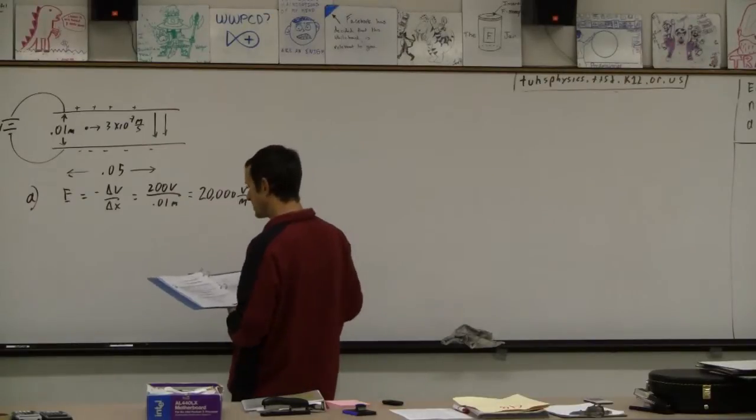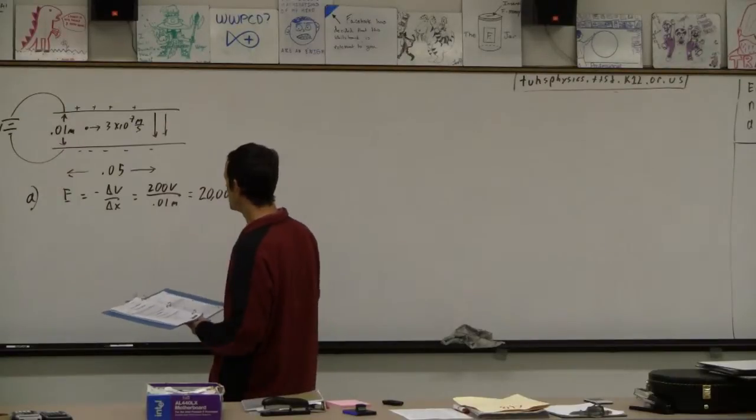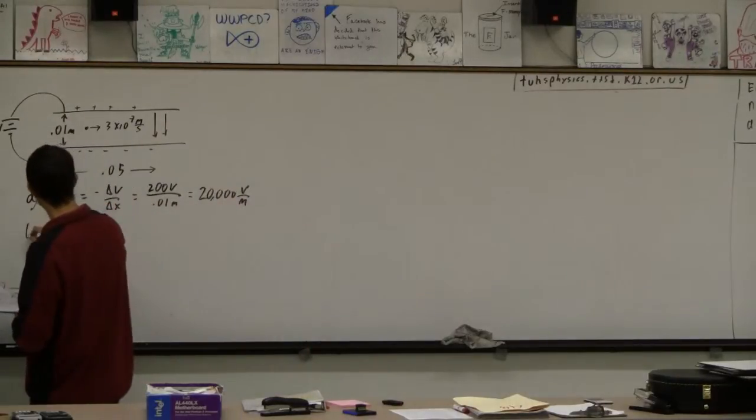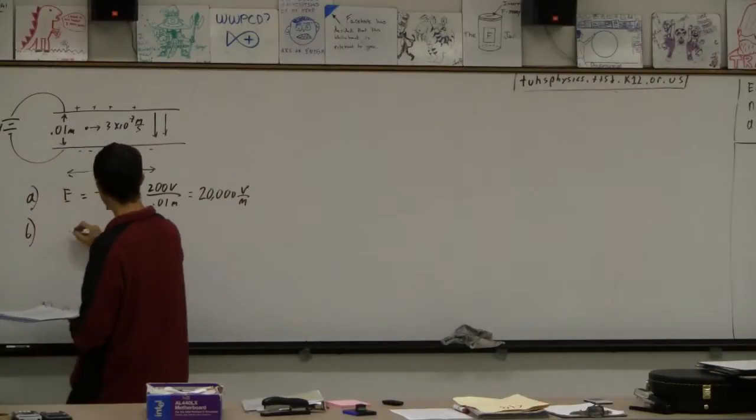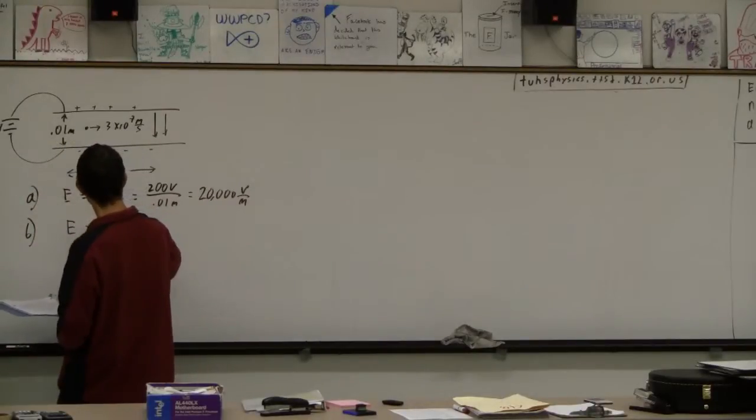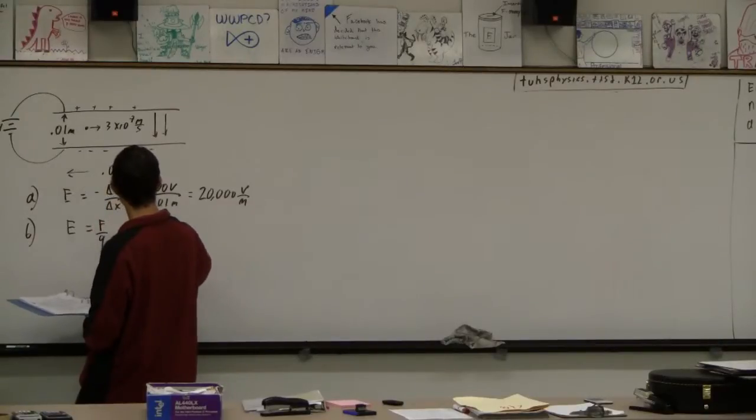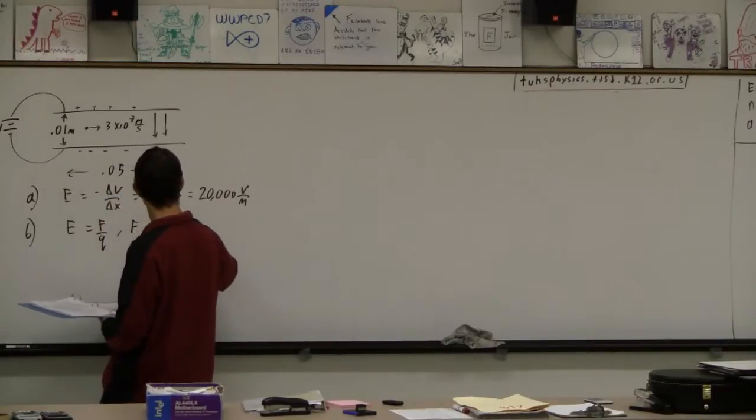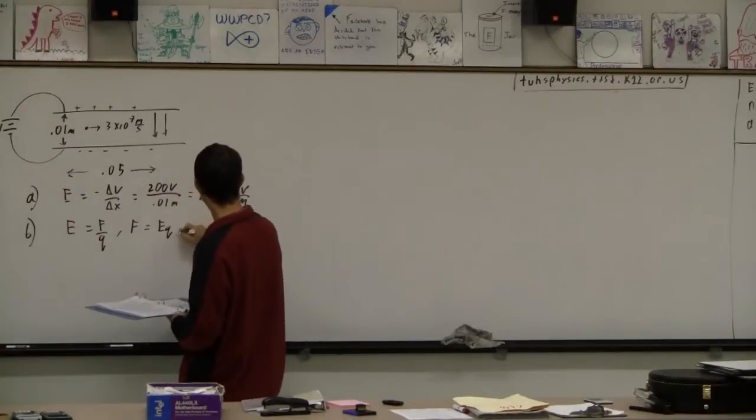And then the next thing says determine the magnitude and direction of the acceleration of the electron in the region between the plates. So for B, I'm actually going to use two relationships. One is E equals F over Q, so therefore F equals EQ. And then I'm also going to use F equals MA.